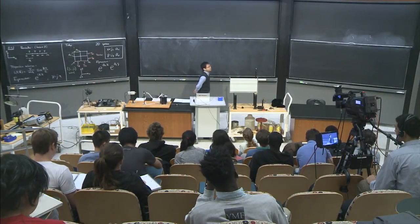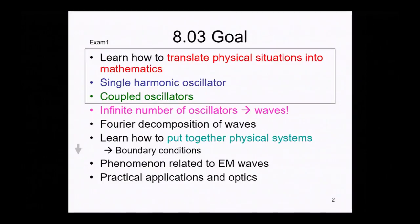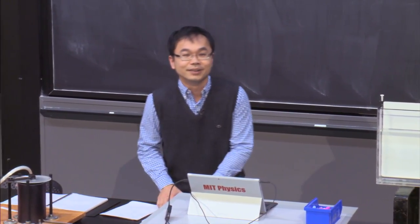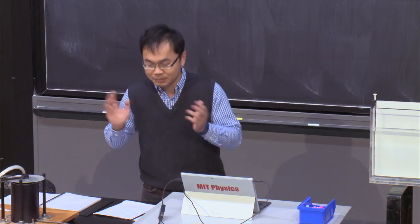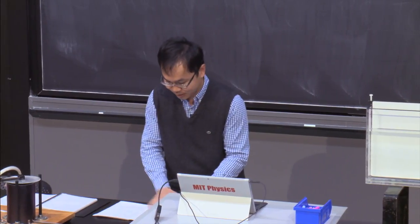So let's get started. This is our goal for 8.03. During exam number one, we covered the first half of the goal. We are making progress to learn about boundary conditions in one-dimensional and two-dimensional systems today. We will talk about phenomena related to electromagnetic waves and optics, and learn two very important fundamental laws related to geometrical optics.